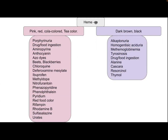If the dipstick is heme negative and the urine is pink, red, or cola/tea colored, the differential diagnosis includes porphyrinuria and drug or food ingestion: aminopyrine, anthrocyanins, azo dye, beets, blackberries, chloroquine, desferrioxamine, ibuprofen, methyldopa, nitrofurantoin, phenazopyridine, phenolphthalein, pyridium, red food coloring, rifampicin, rhodamine B, sulfasalazine, and urates.